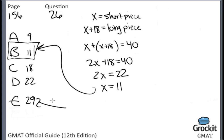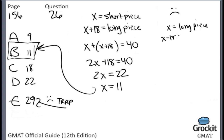Note the trap: 29 is the length of the other piece. If you had set x as the long piece, you'd solve x minus 18 equals the short piece, and get x equals 29 — true, but not what the question asked. You could still arrive at the correct answer that way, but setting the variable to what you're actually solving for reduces the probability of error. Whenever possible, name the variable you're actually trying to find. A recurring theme in trap answers: they come from solving for the wrong variable or intermediate steps.